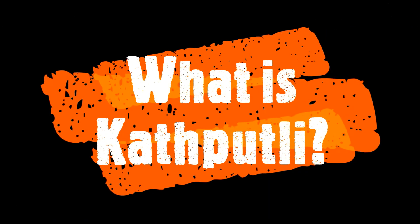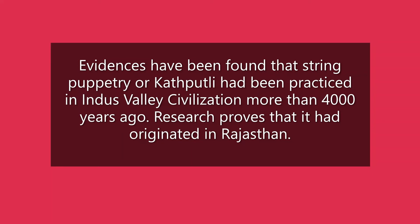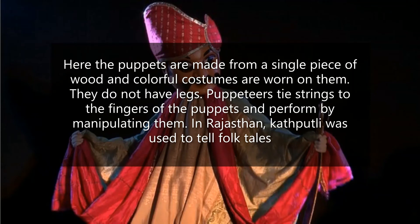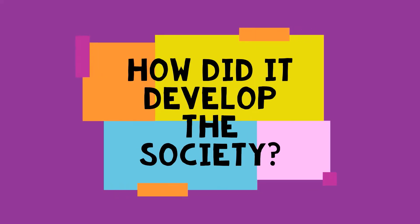Hello, teachers and my dear friends. Today I am going to explain an ancient art of India — Kathputli. Evidence has been found that string puppetry, or Kathputli, had been practiced in Indus Valley civilization thousands of years ago. Research proves that it had originated in Rajasthan. The puppets are made from a simple piece of wood and costumes are worn on them. They do not have legs, and puppeteers tie strings to the hands of the puppets and perform by manipulating them. In Rajasthan, Kathputli was used to tell folk tales.